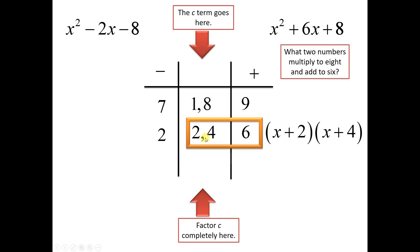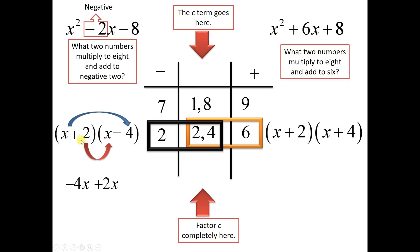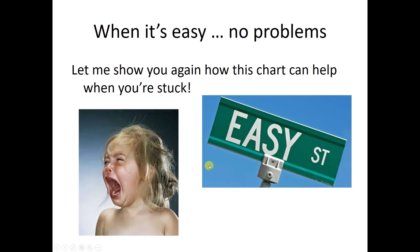The other one is trickier because C is negative. I know a negative times a positive is negative, so these factors are different signs. Whenever C is negative, the two factors are different signs. Whenever C is positive, they're the same sign — both negative or both positive. The B term tells us which sign goes where. Since B is negative here, I'd have a negative 4 and a positive 2, because negative 4 plus 2 gives me negative 2. If you ever get stuck you can use the chart, but if things are easy for you, you don't need to.